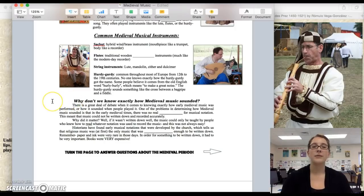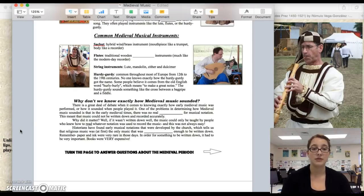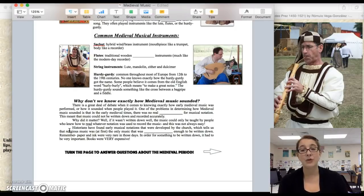So now let's look down here. Why don't we know exactly how medieval music sounded? Well, there is a great deal of debate when it comes to knowing exactly how early medieval music was performed, or how it sounded when people played it. One of the problems was that there was no real system for musical notation. This meant that music could not be written down and recorded accurately. Why did it matter? Well, if it wasn't written down well, music could only be taught by people who knew how to read whatever notation was used to record the music. And this was not always easy. Historians have found early musical notations that were developed by the church, which tells us that religious music was, at first, the only music that was important enough to be written down. Remember, paper and ink were very rare in those days. In order for something to be written down, it had to be very important, because books were very expensive.